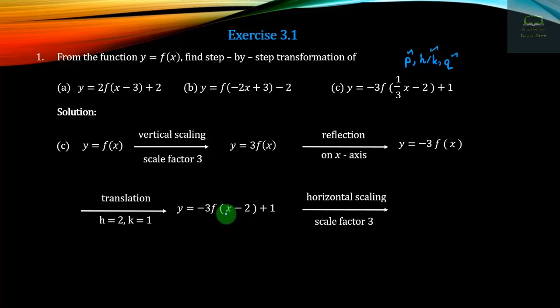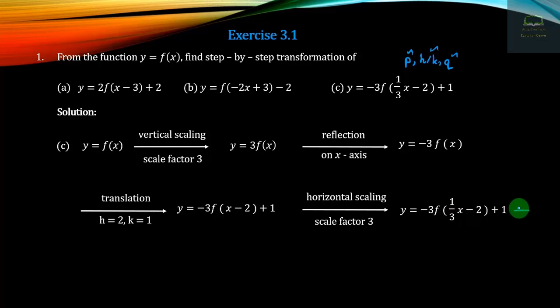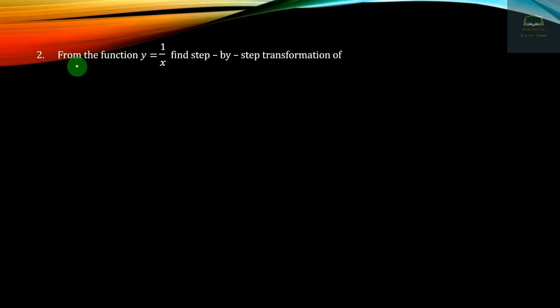The ratio of 1 by 3 will be 0. We will define the ratio of y-3 for 1 by 3x minus 2 plus 1, to ratio of the transform function of y-3. The ratio of y-3 is equal to y-3, equal to 1 by 3x minus 2 plus 1, to ratio of the transform — 1 star-by-star transformation.